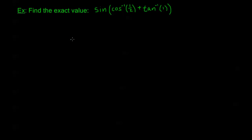Now let's look at a numerical version: find the exact value of sine of cosine inverse one half plus tangent inverse one. The way I'm going to do this first is not the easiest way for these specific values, but it is the surefire method for any problem of this type. If I had values like five sixths or four fifths, I couldn't evaluate the inverse trig functions easily without a calculator. So this problem is just to practice the double triangle method — I chose easy numbers so we can set up the triangles quickly.